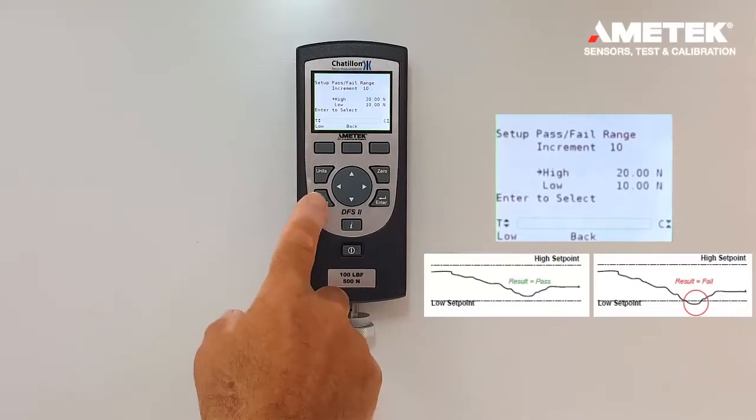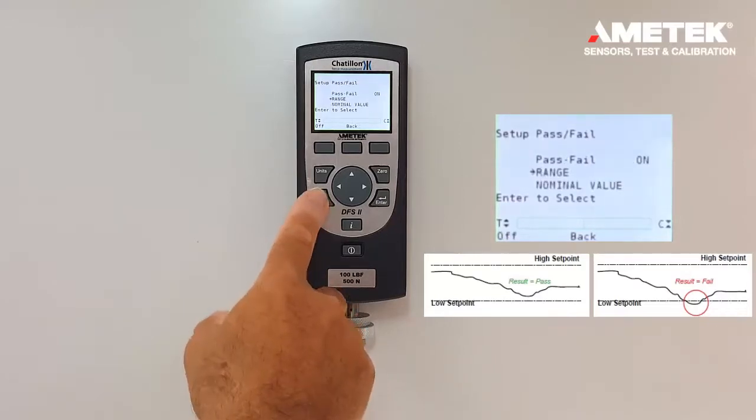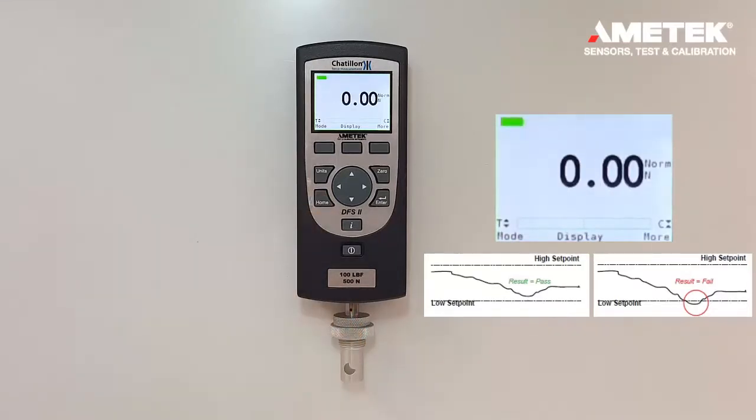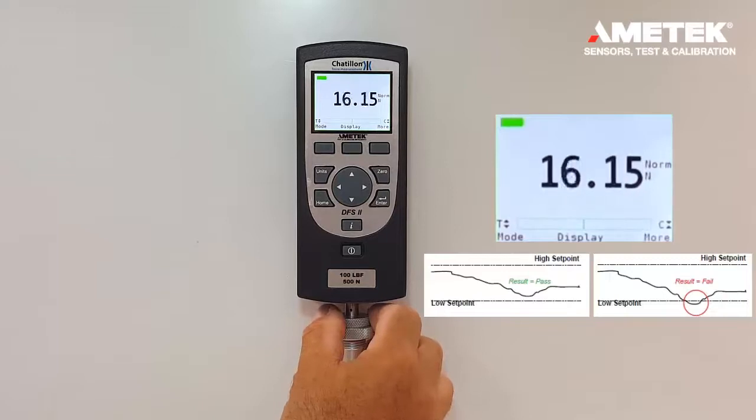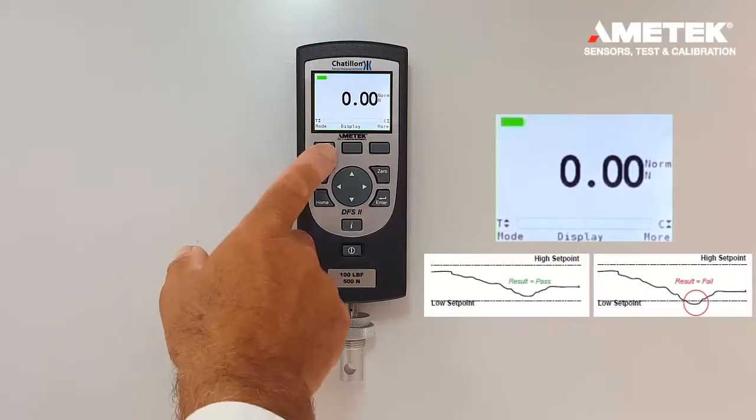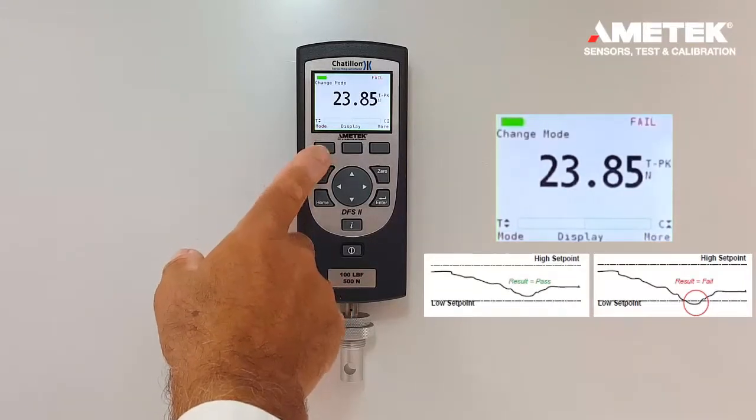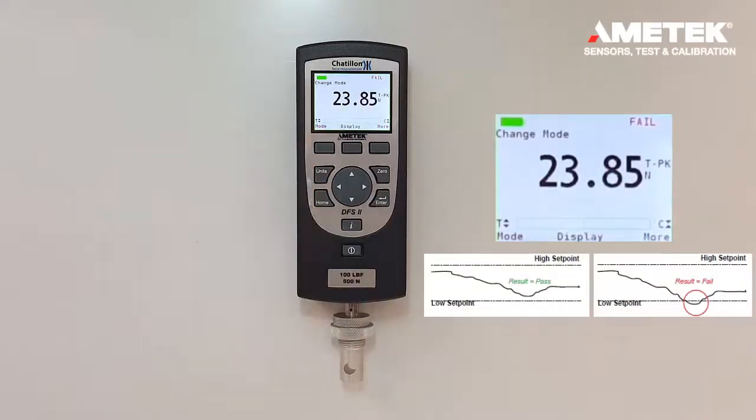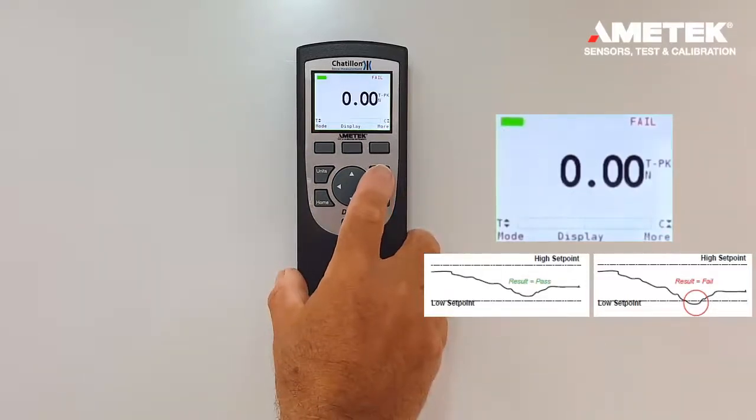So if we go back to the home screen by pressing twice the home screen, now we have our normal value, we're in normal setting and if we're between 10 and you'll notice that in the normal mode we don't register a pass or fail condition. So what needs to be done is we need to press the mode button and we need to set the tension peak. Now in order to reset this you press the zero button.